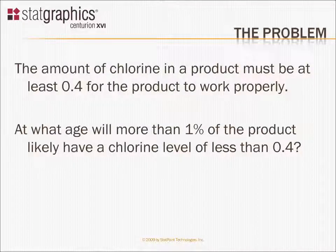To be concrete, let's pose a problem. Let's suppose the amount of chlorine in the product must be at least 0.4 for the product to function properly. Given the sample of data, how do we estimate the age, the maximum age, at which no more than 1% of the product is likely to have a chlorine level of less than 0.4?